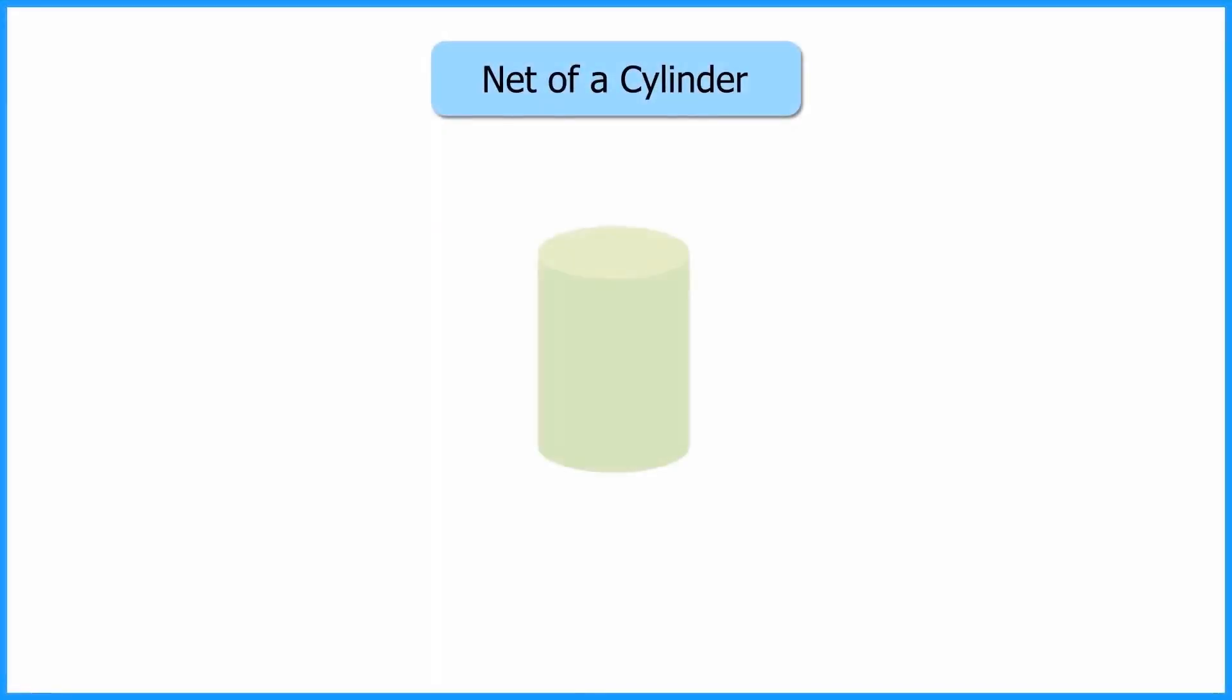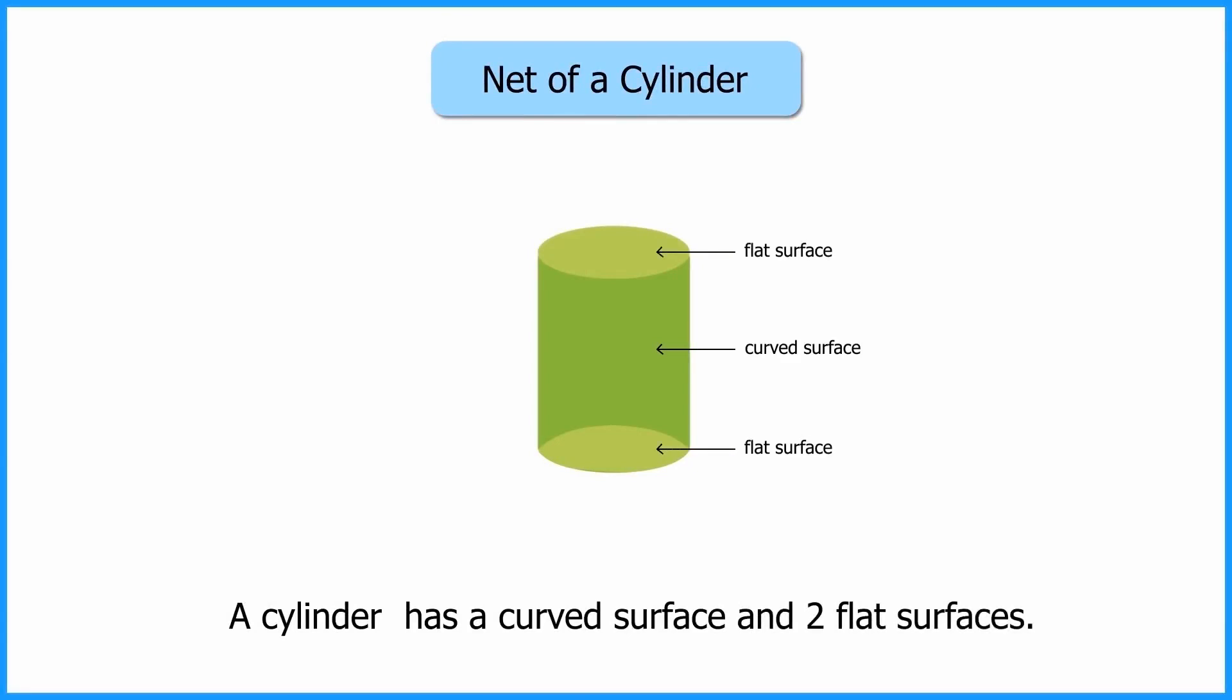Let us now take a cylinder and try to unfold the same. We know that a cylinder has a curved surface and two flat surfaces. Now on unfolding the cylinder, its net looks like this.